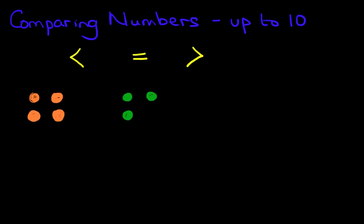Now which of these symbols do you think goes between them? Let's count them — we've got one, two, three, four. So we've got four oranges. On the right hand side we've got one, two, three apples. So there are more oranges than apples. The symbol which goes in the middle is this one — four oranges are more than three green apples.